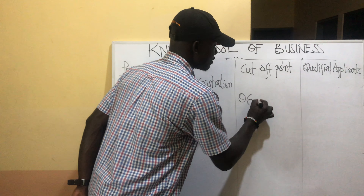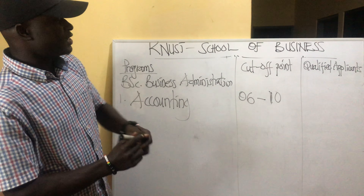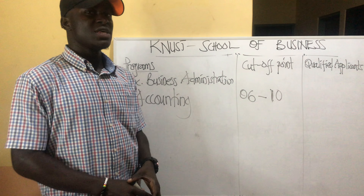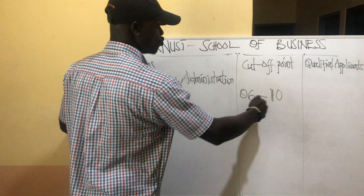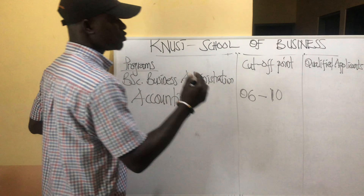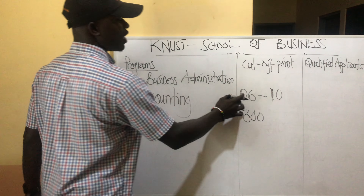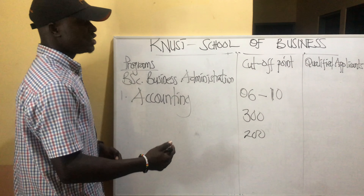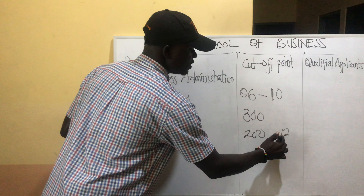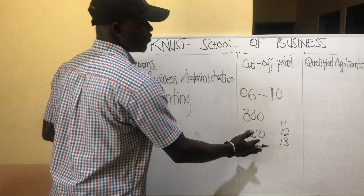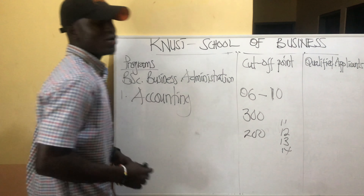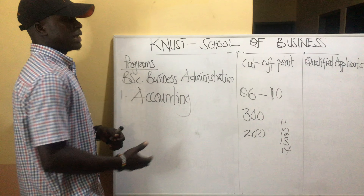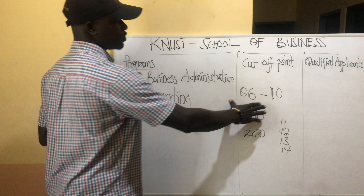The cut-off point is from grade 6 to 10. If your best six results do not fall in this range, it doesn't mean you cannot be admitted. For instance, if they want to admit 300 students and only 200 people within grade 6 to 10 applied, they still need 100 more. So they will move to those with grade 11, 12, or even 13 until they fill the slots. If you have grade 12, 11, 12, 13, or 14, you can still apply.